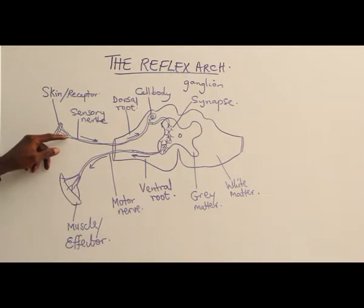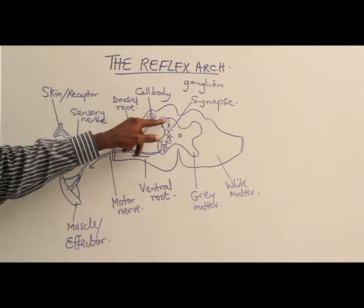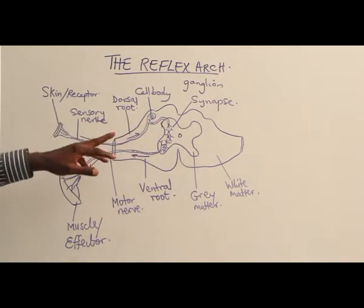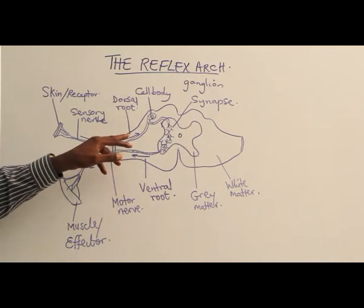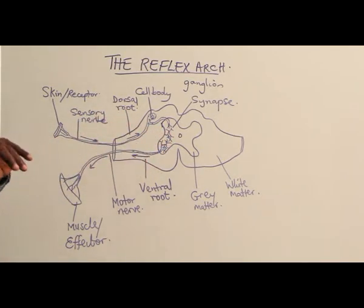And the impulses will be passed through the sensory nerve to the spinal cord. When the impulse gets to the spinal cord through the dorsal root, the spinal cord will now interpret what is happening.